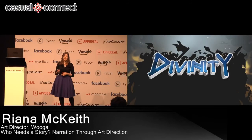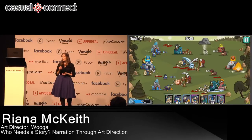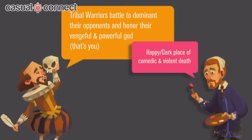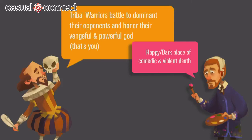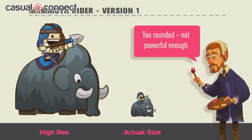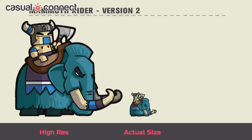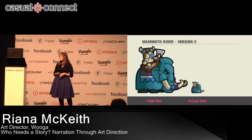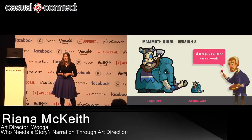In my own work on Divinity — a mid-core PvP tribal battle game — I was asked to design a tank unit. My rules: tribal warriors, tank unit, mammoth. But it just didn't feel right. The unit had to feel very desirable and powerful, but it was too rounded, too sweet — you could cuddle it, it didn't feel dominating. So we changed it to be a lot more strong and powerful through shape language alone. Everything else more or less stayed the same, but that changed exactly how everyone was going to feel about it in the game world.